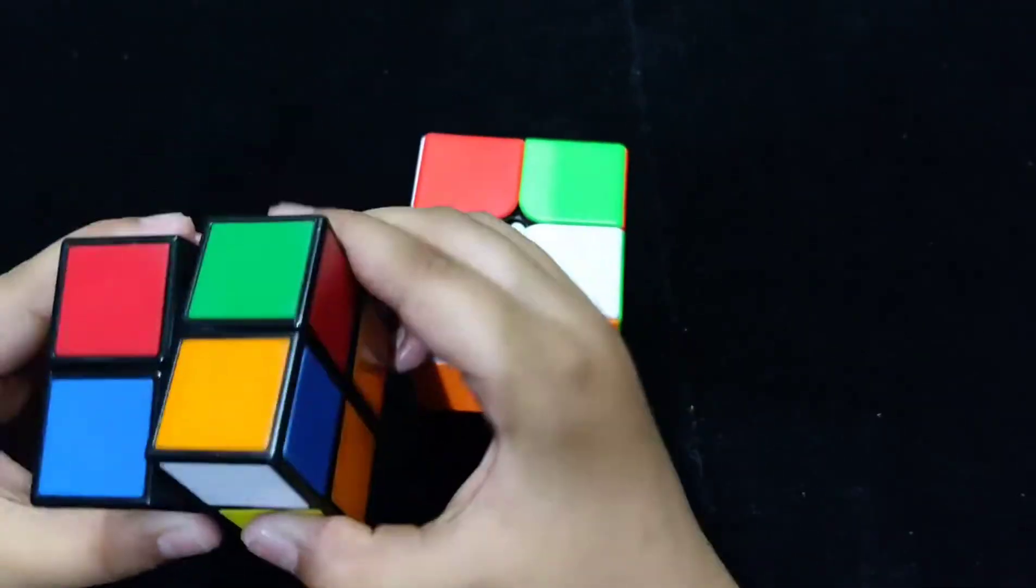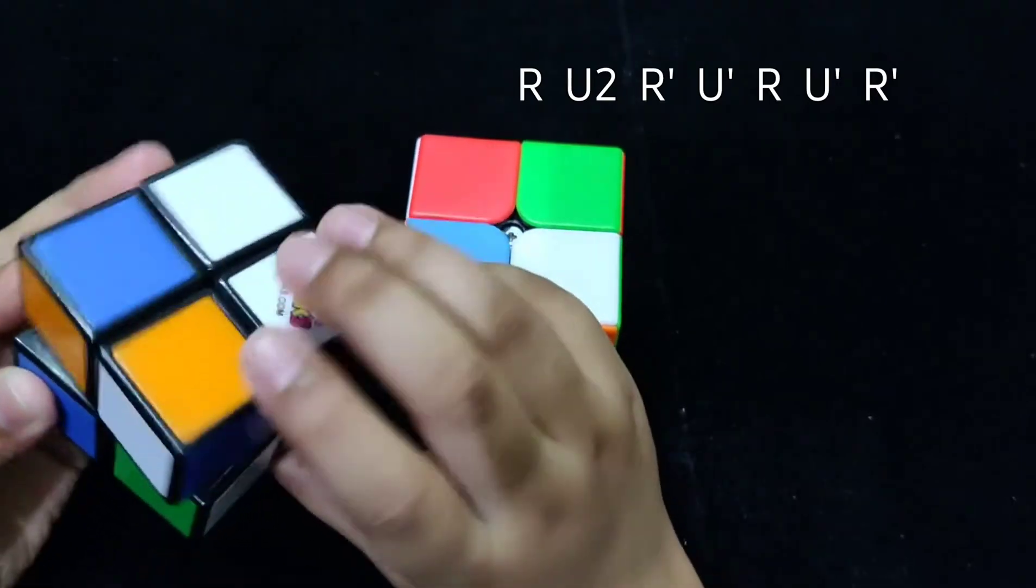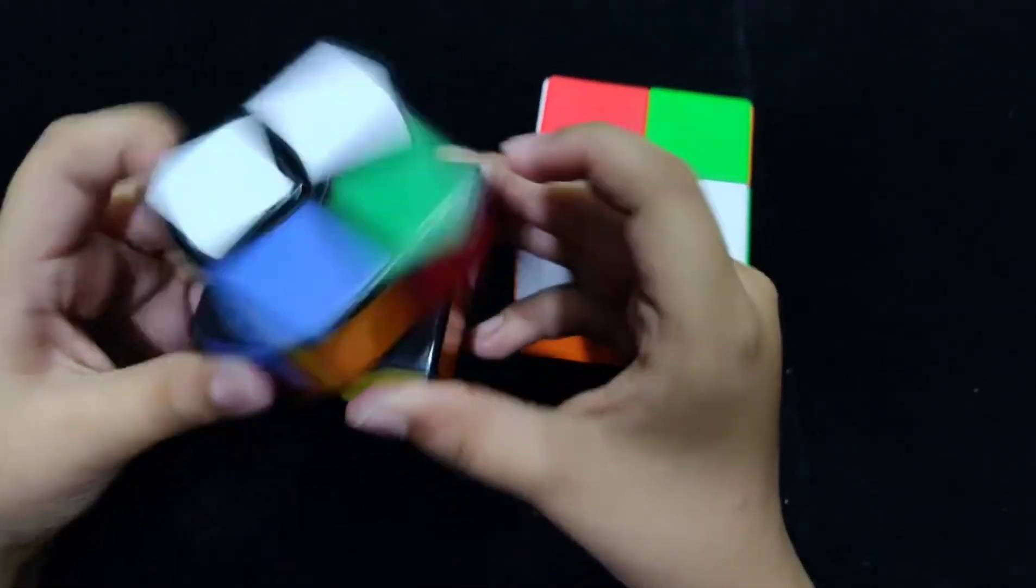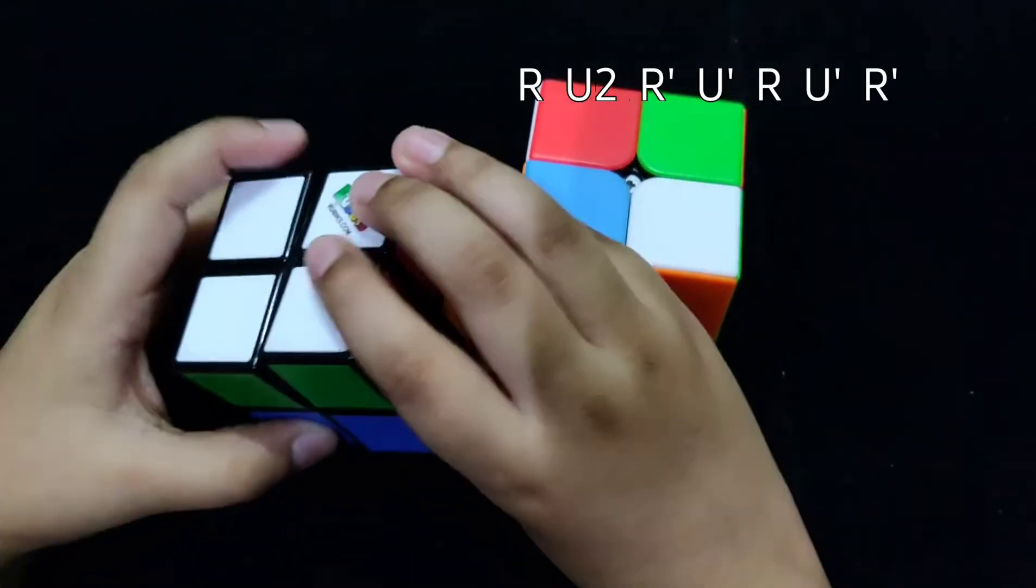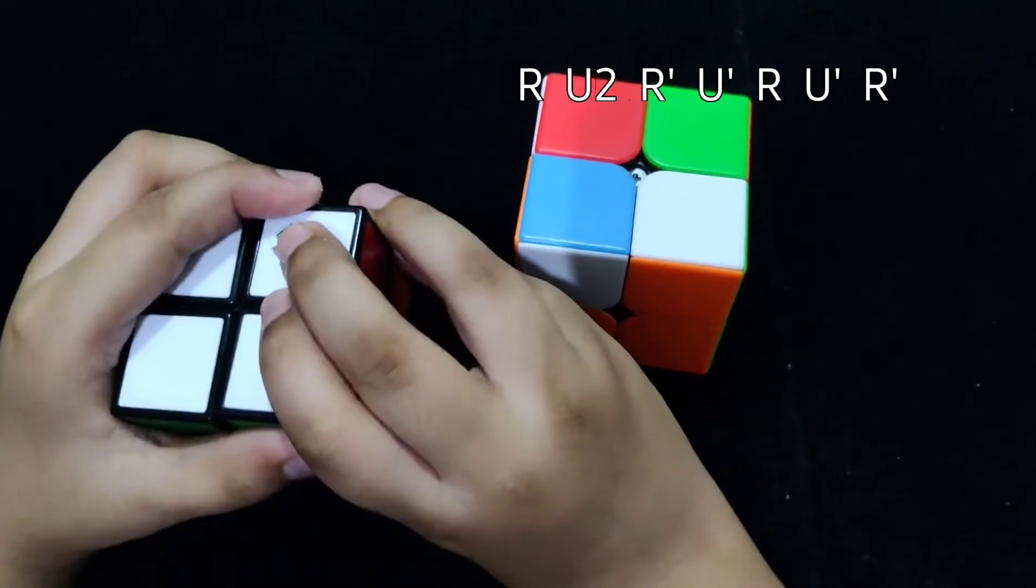R, U2, R', U', R, U', R', and then you will have your cube solved.